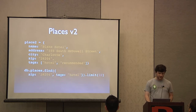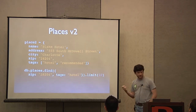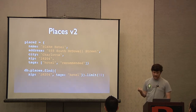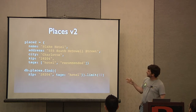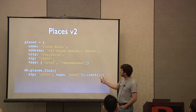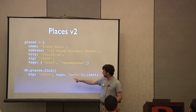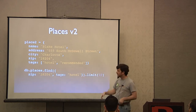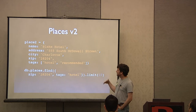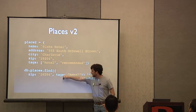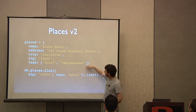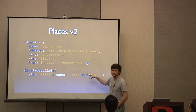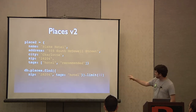One thing we can do when updating places is add a tags field. This shows a MongoDB-unique feature: we can have an array of tags. Then when querying for hotels, we say we're looking for things in 28204 that are also tagged 'hotel,' getting a smaller number of documents back. MongoDB, whenever you give it an array type field, checks whether any element of that array matches what you're asking for. We're still limiting it to 10 results.